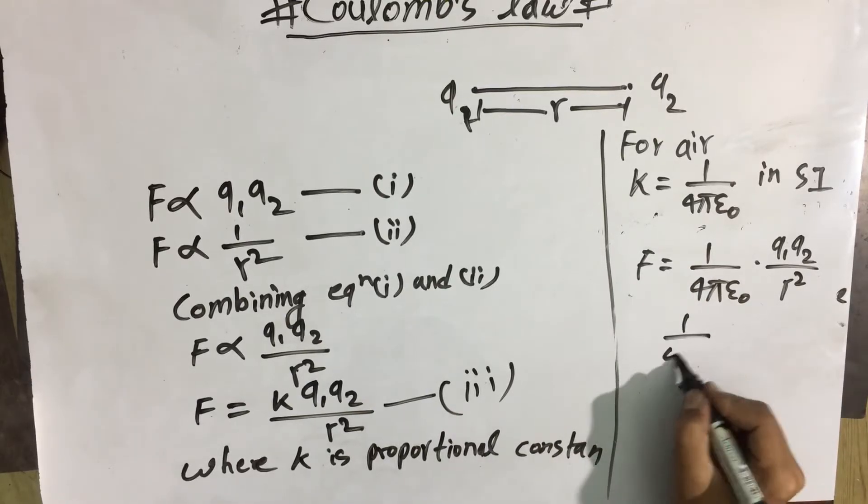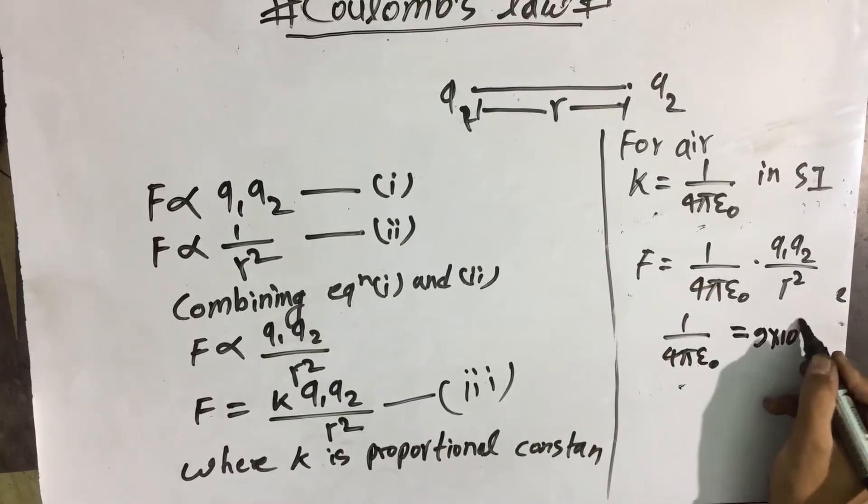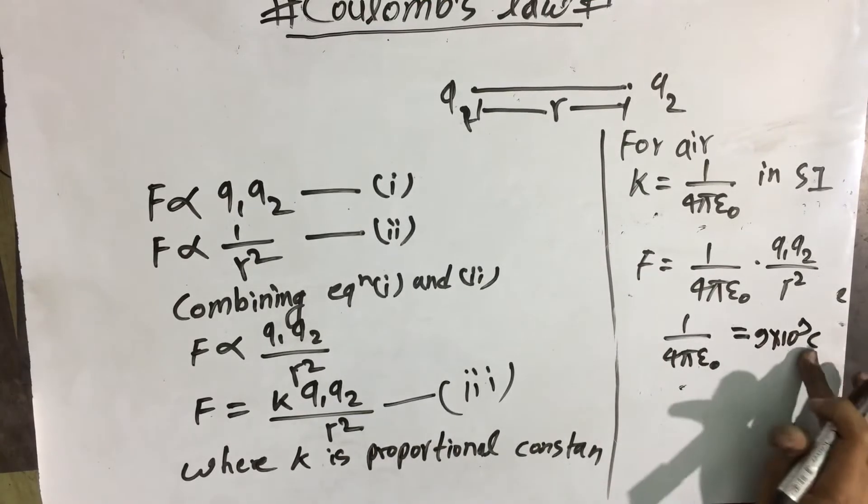The value of 1 by 4 pi epsilon naught is 9 into 10 to the power 9 Newton meter square per coulomb squared.